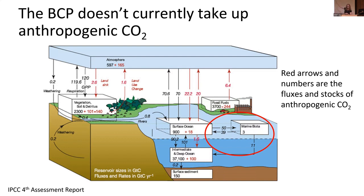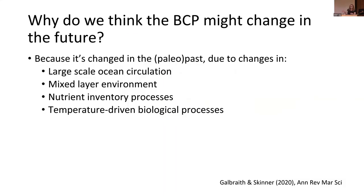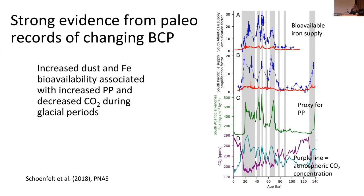So what makes us think the biological carbon pump will change in the future? We think it might change because we know it's changed in the past — on paleo timescales. On long climate timescales, you have to change the balance between the downward and upward transport of dissolved inorganic carbon. This could happen through changes to large-scale circulation affecting nutrient upwelling, changes to the mixed layer environment such as stratification and light availability, changes to nutrient inventories through nitrogen fixation or iron supply, and temperature affecting metabolic rates of growth or respiration. Paleo evidence strongly supports that the biological carbon pump has changed in the past and does feed back to climate.